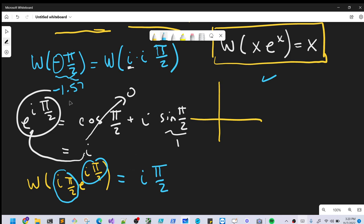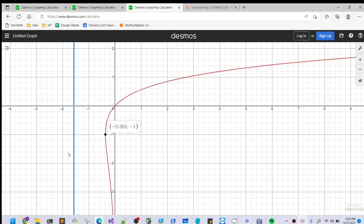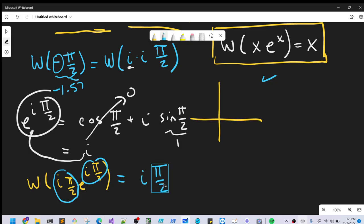But because we're in the complex part of the Lambert W function, like we saw in the graph, everything out here is complex. There's always going to be an infinite amount of solutions that are complex for the Lambert W function.